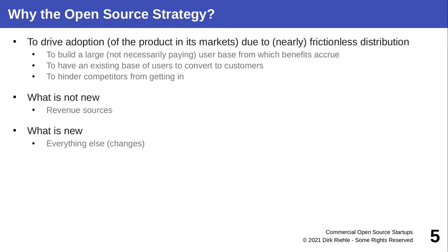Why would you follow a commercial open source strategy? The idea is to drive adoption of the open source software in its market such that the ubiquitous presence of your open source software is a path to innovation but more importantly to sales of your complementary product. You open source something valuable to users to build a large user base — not customers, they are not paying — from which benefits accrue, including bug reports and ultimately converting some users to paying customers.